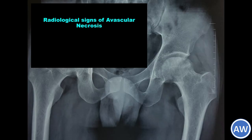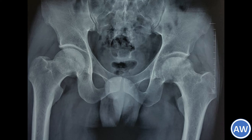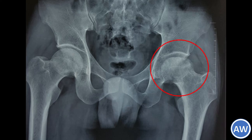Radiologically, the signs of avascular necrosis are sclerosis of the necrotic area and deformity of the bone. In this X-ray, we can see avascular necrosis affecting the left head of the femur, marked by significant loss of curvature of the femoral head and flattening of the articular surface. The radiological sign becomes apparent when we compare the left femoral head with the unaffected femoral head on the right side.